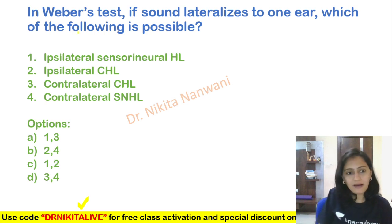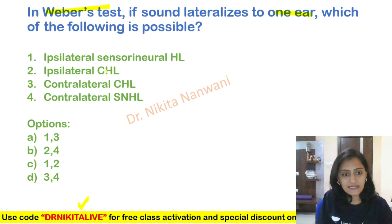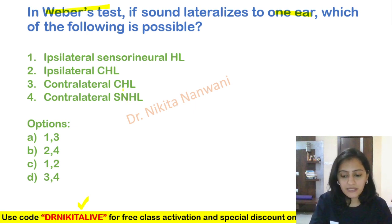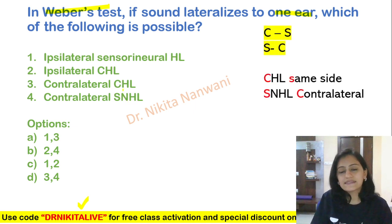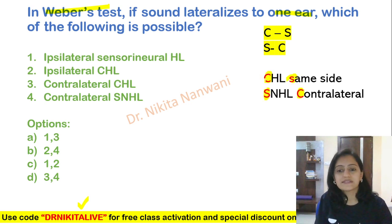So let's talk about in Weber's test, if sound lateralizes to one ear, which of the following is possible? Ipsilateral SNHL, CHL, or contralateral CHL or SNHL? So the trick to remember is that C is for S and S is for C. That means CHL same side or SNHL contralateral side.